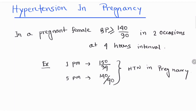Hypertension in Pregnancy. In a pregnant female, BP more than or equal to 140/90 on 2 occasions at 4 hours interval is called Hypertension in Pregnancy.